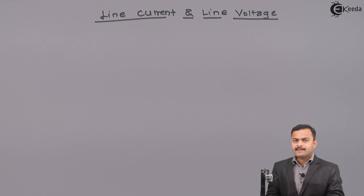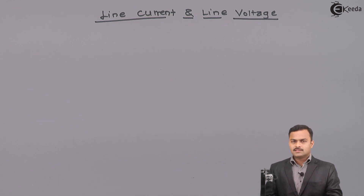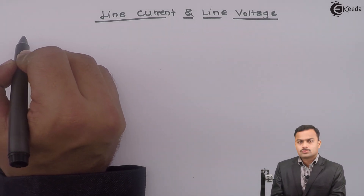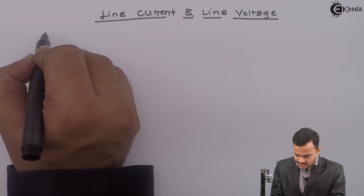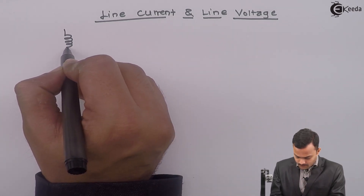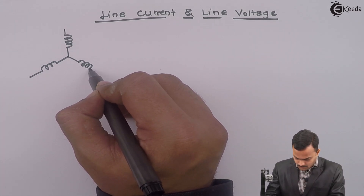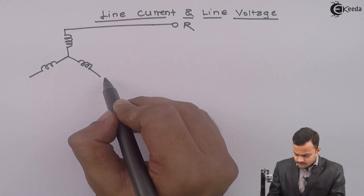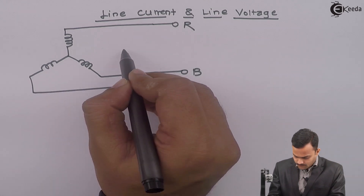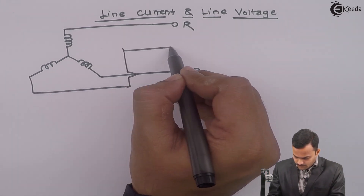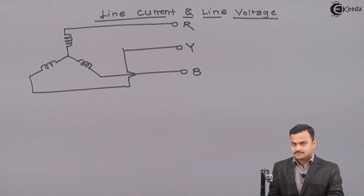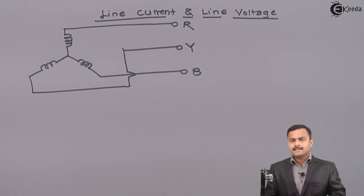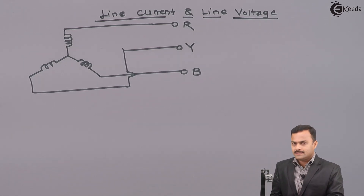In order to understand line current and line voltage, we need to consider a three-phase supply. So it will be like this. Obviously it will be for star as well as delta. I will consider star first. So star supply will be like this. This part is nothing but the line. So what is the line current?